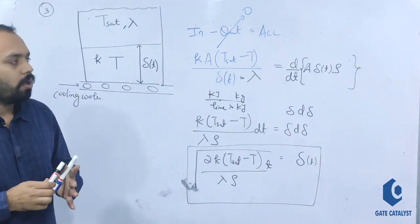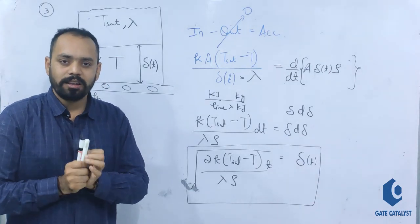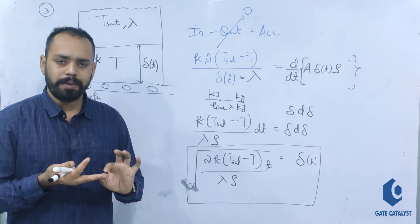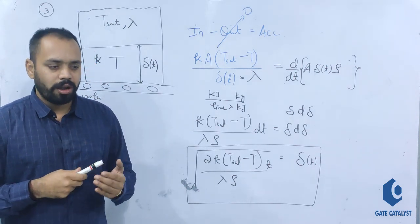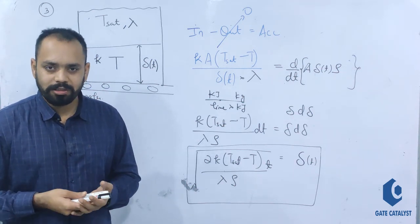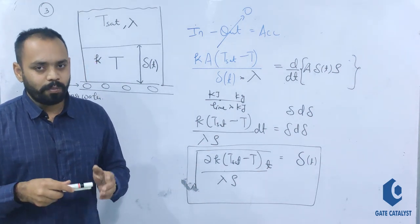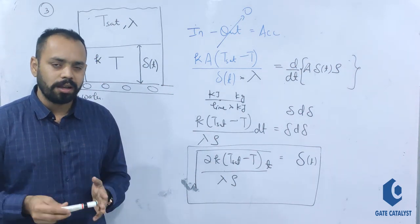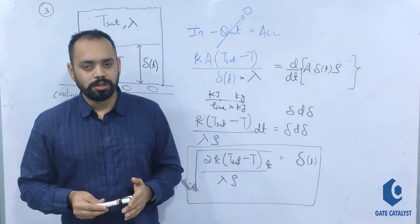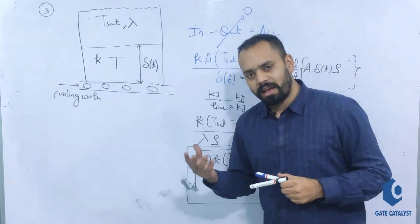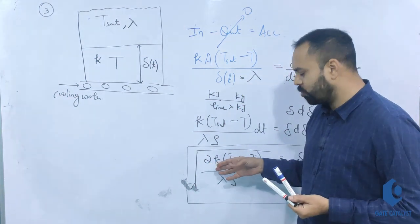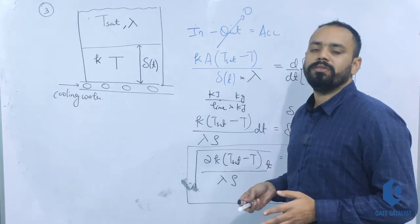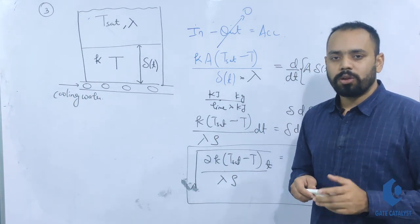This solution uses only Fourier's law and an unsteady-state mass balance — no complex condensation correlations. Most books and faculties give the wrong answer for this problem because they omit the factor of 2, which appears only when the unsteady-state balance is written correctly. This is the correct solution.